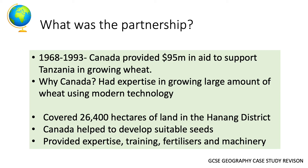Canada provided $95 million in aid to support Tanzania in growing wheat. Why Canada? Because Canada had expertise in growing large amounts of wheat using modern technology. The program covered 26,000 hectares of land in the Hanang district in Tanzania, and Canada helped Tanzania develop suitable seeds and provided expertise in training, fertilizers, and machinery.